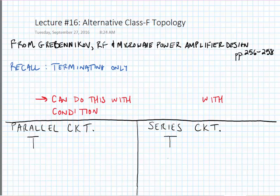Recall from the last lecture that we only need to terminate a couple of harmonics in order to result in peak efficiencies that can be as high or nearly as high as class B power amplifiers.